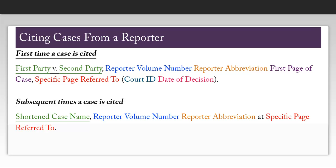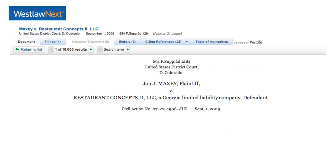The court ID is not necessary for cases found in the U.S. reports because those reporters only include Supreme Court cases. Subsequent times a case is cited, you can use a shortened case name, the reporter volume number and abbreviation, as well as the specific page referred to, so you won't have to include quite as much information. If you use a library resource such as Westlaw Next or LexisNexis Academic, you'll be able to find all of the information you need in order to cite a case.